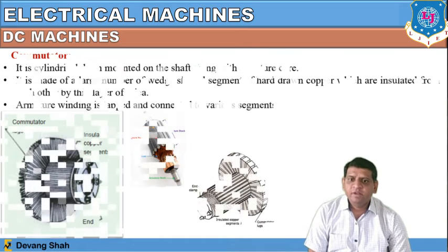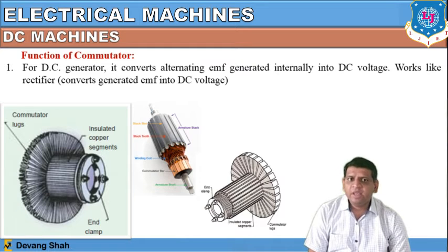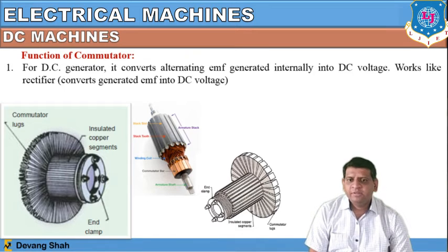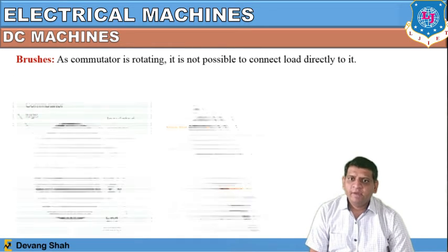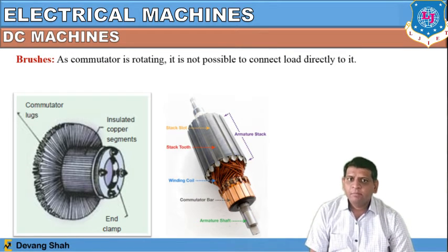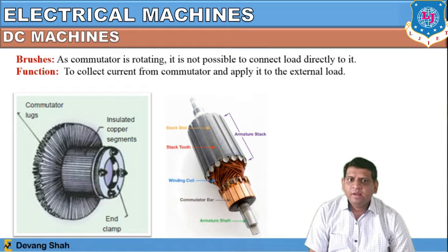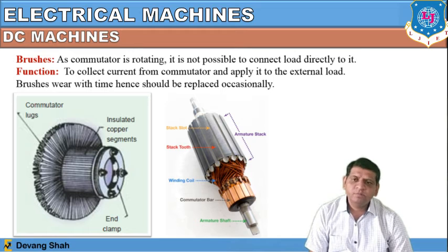The function of the commutator: for a DC generator, it converts the alternating EMF generated internally into a DC voltage — it acts as a rectifier. For a DC motor, it helps to produce unidirectional torque. At the end of the commutator, brushes are connected. Since the commutator is rotating, it is not possible to connect a load directly to it, so brushes are required to collect the current from the commutator and apply it to the external load. Brushes wear with time and hence need to be replaced occasionally — they are a maintenance part.